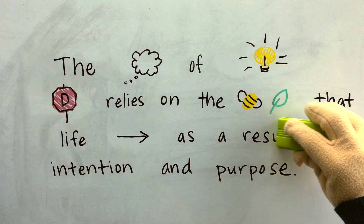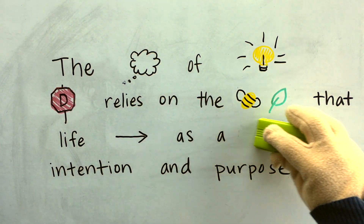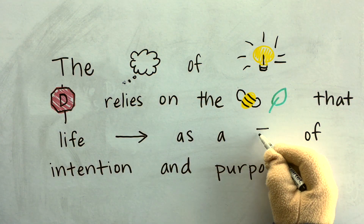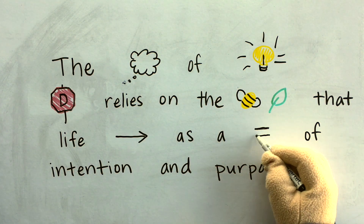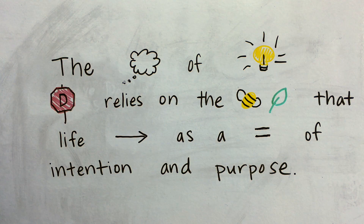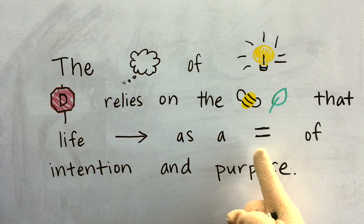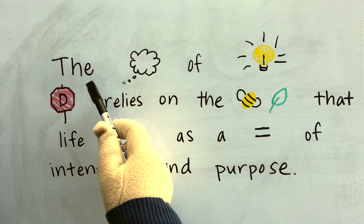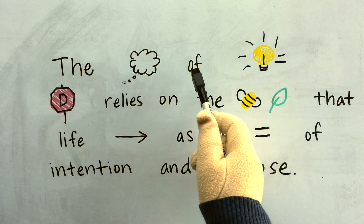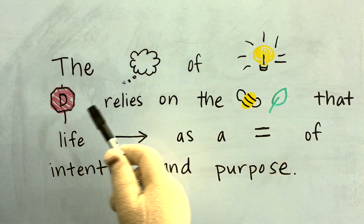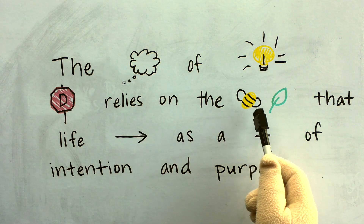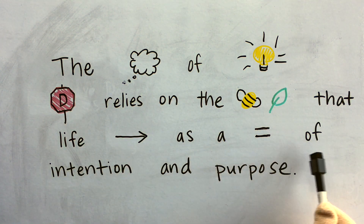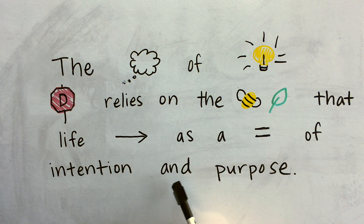Now let's erase the word result and put an equal sign, because when you're doing math and you want to find the result of an equation, you would use an equal sign. The theory of intelligent design relies on the belief that life began as a result of intention and purpose.